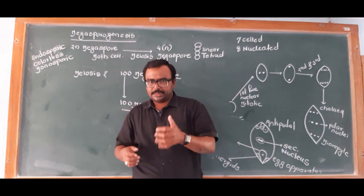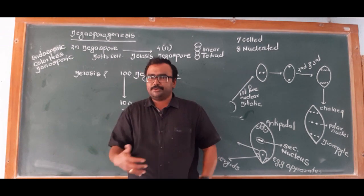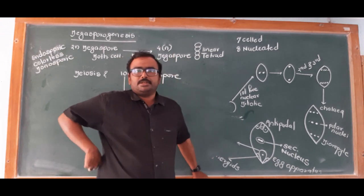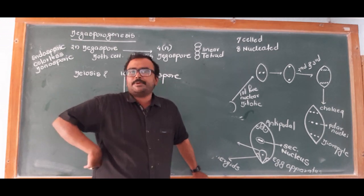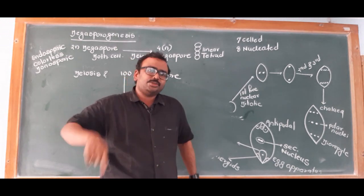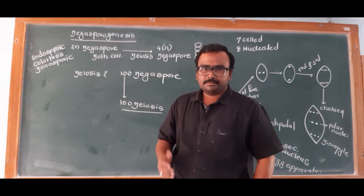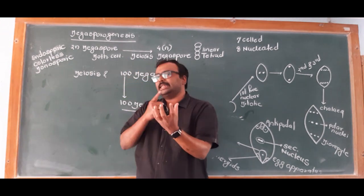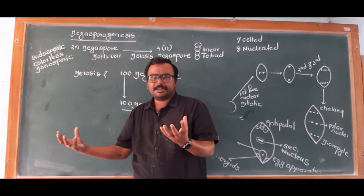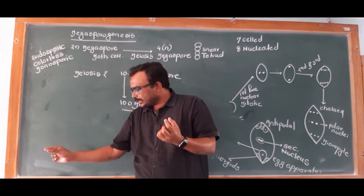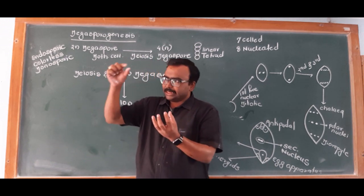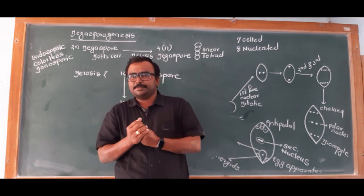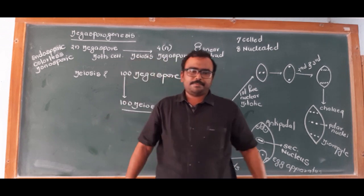In this part we developed the female gametophyte. For fertilization in angiosperms, there are two non-motile gametes. If pollen grain reaches the stigma, fertilization is possible. The transfer of pollen grain to the stigma is called pollination. The types of pollination will be discussed in the next lecture. Thank you.